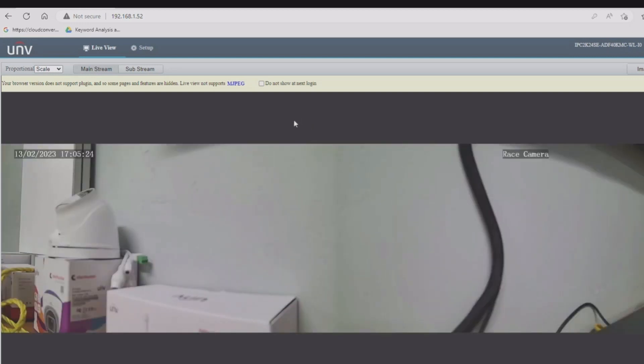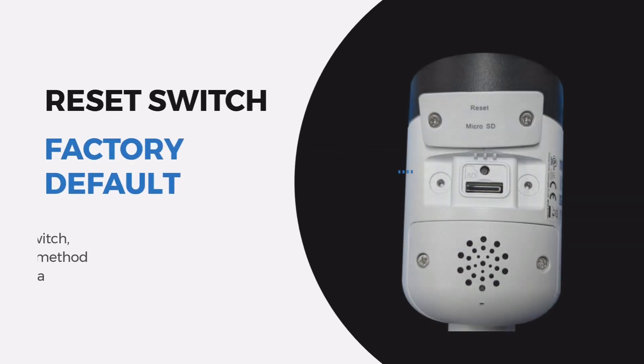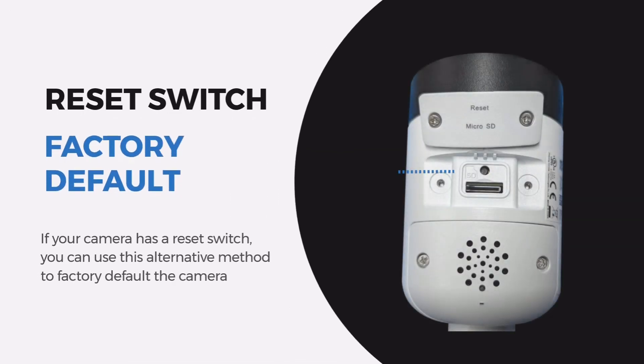There we go — got a video feed from the camera using the updated password. The next method is the reset switch method. This will factory default your camera and allow you to log in with the default password.